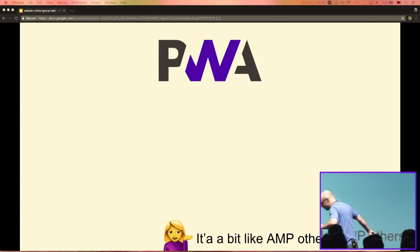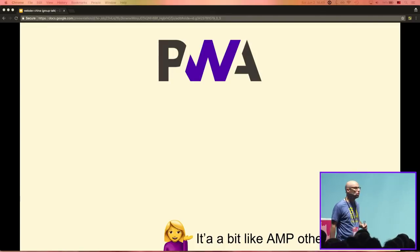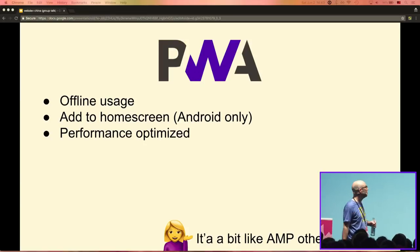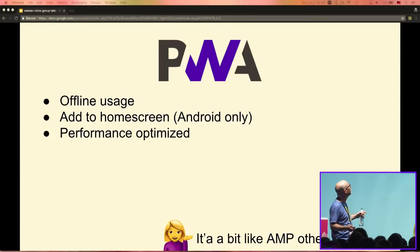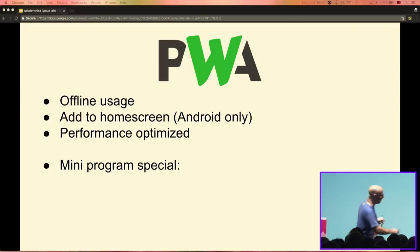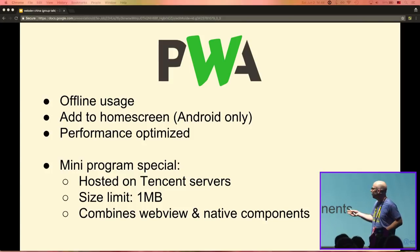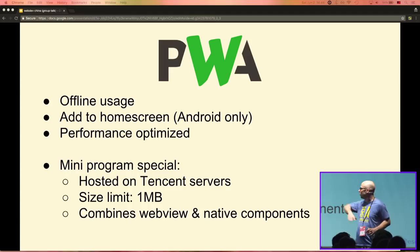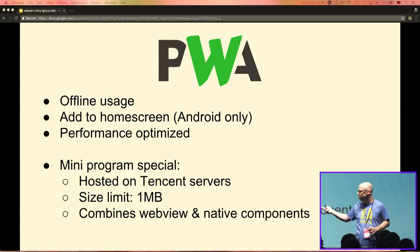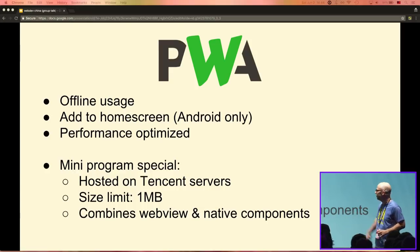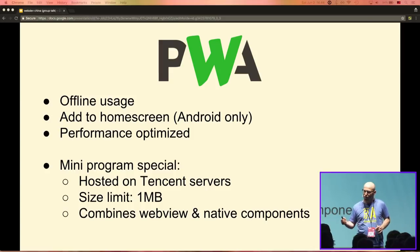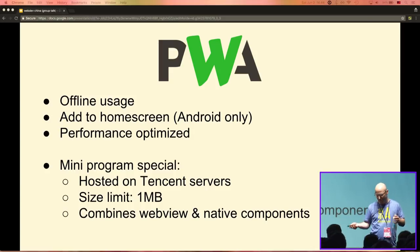You might say this reminds you of a PWA — and yes, you're right. You can use it offline, add it to your home screen, and it's really highly performance-optimised and loads very fast. I call it progressive WeChat apps, exchanging the W. But it's a little bit special: these mini programs are not hosted on your own servers — they're hosted on Tencent's servers, which are all over the world, so they open very fast in WeChat. There's an initial size limit of one megabyte, so it loads very quickly.